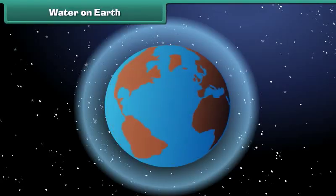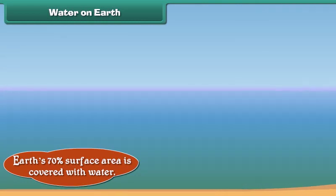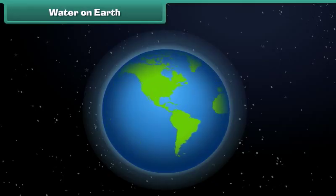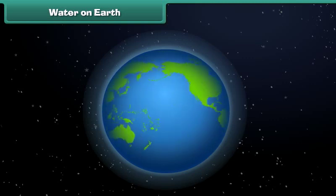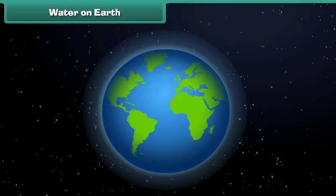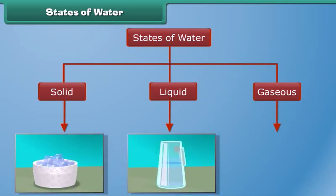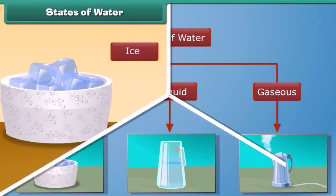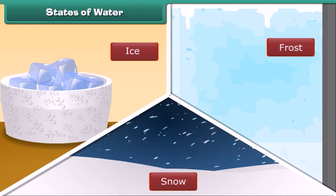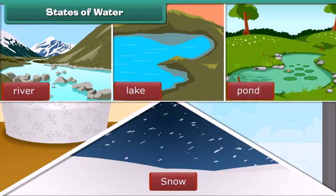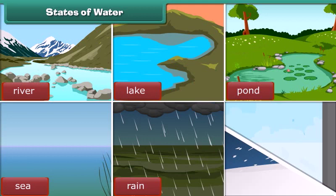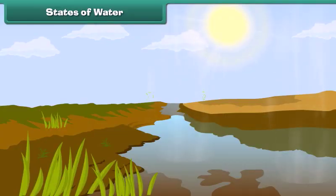What is the most abundant substance present on the earth? Our earth's 70% surface area is covered with water. Earth is also called a blue planet because when seen from space it appears blue due to water. Water exists in three states: solid, liquid and gaseous. Ice, snow and frost are examples of water in the solid state. You see liquid water in rivers, lakes, ponds, sea, when it rains, and the water coming out of a tap. Water vapor is a gas in the air and you can't see it because it is invisible.